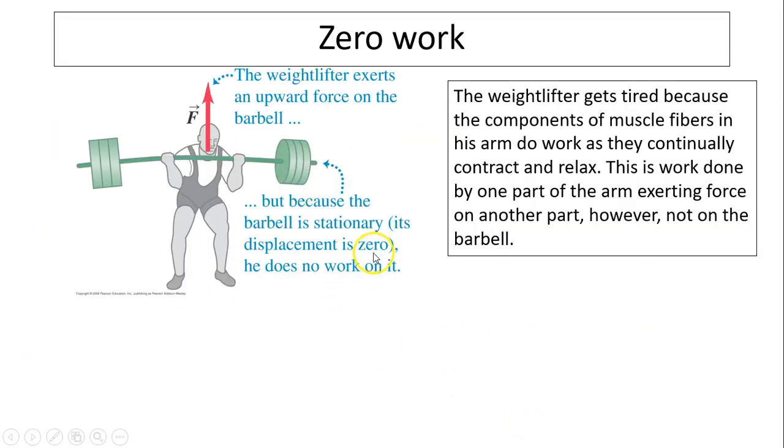Let's look at an example of zero work. A weightlifter exerts an upward force on the barbell, but because the barbell is stationary, its displacement is zero, so he does no work on the barbell. The weightlifter gets tired because components of muscle fibers in his arm do work as they continually contract and relax. This is work done by one part of the arm exerting force on another part, however, not on the barbell.